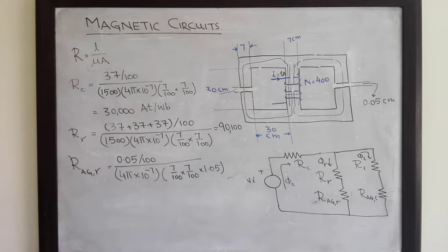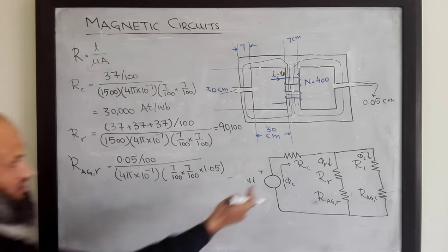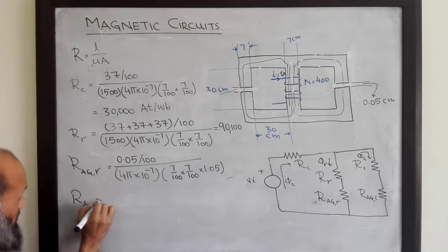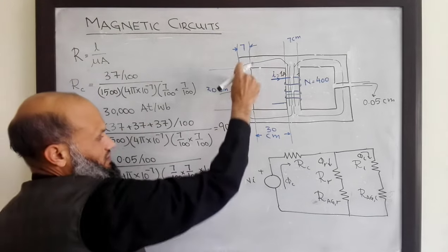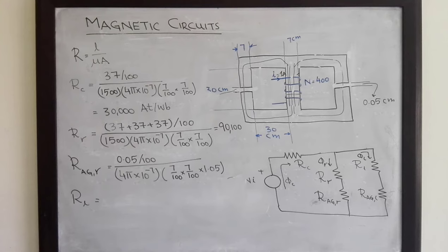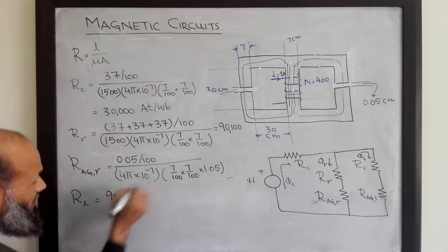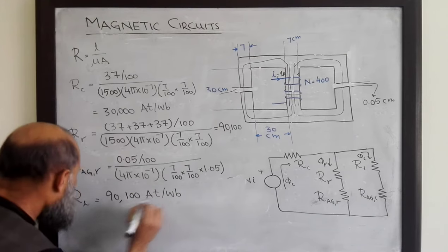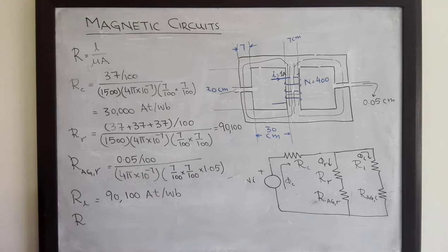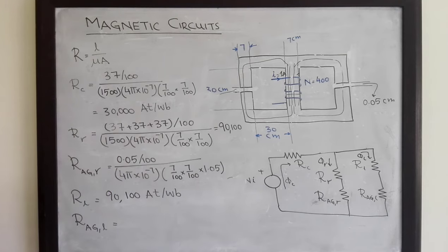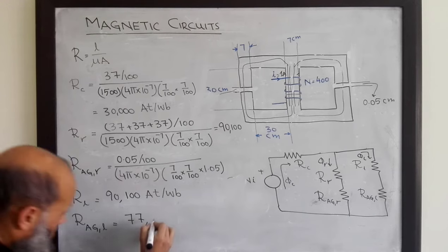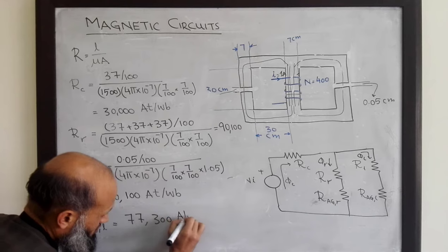Similarly, we can determine the reluctance of the left limb using the same expression with the appropriate lengths and cross-sectional areas. It comes out to be 90,100 ampere-turns per weber. The reluctance of the left air gap, computed by similar calculations, comes out to be 77,300 ampere-turns per weber.